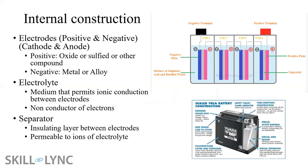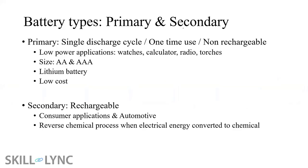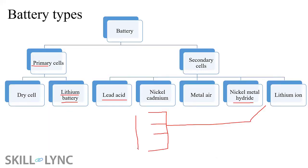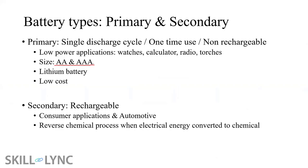Let's discuss the difference between primary and secondary cells before covering lithium-ion classifications. Primary cells include double-A and triple-A cells used in everyday items like remote controls and wall clocks. They are low cost, and after use, scrap collectors gather them for recycling. Secondary rechargeable batteries are those where the reverse chemical process is possible — where electrical energy gets converted back into chemical energy.